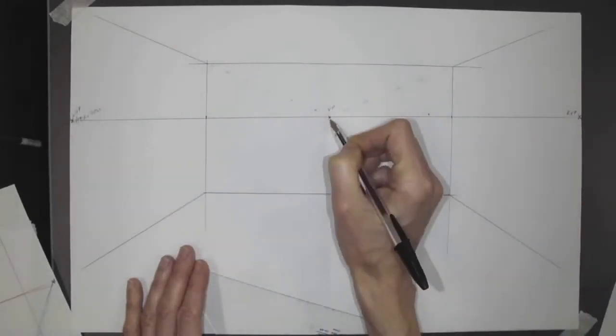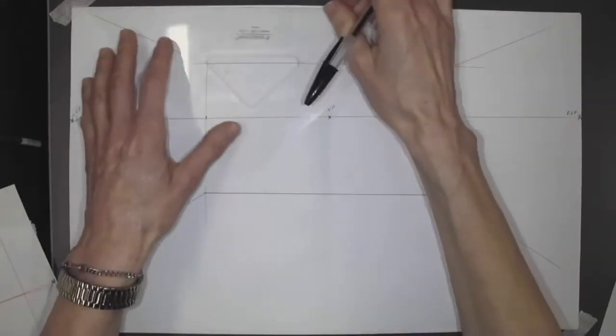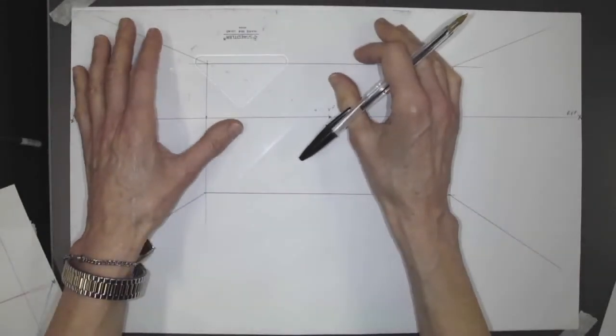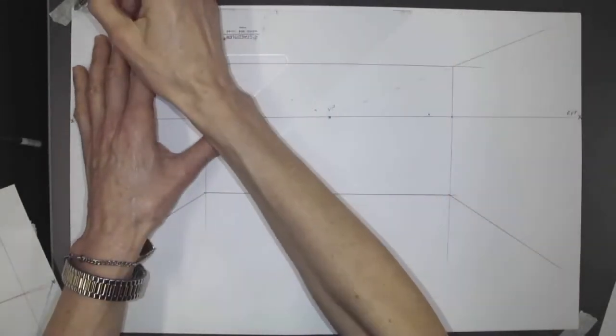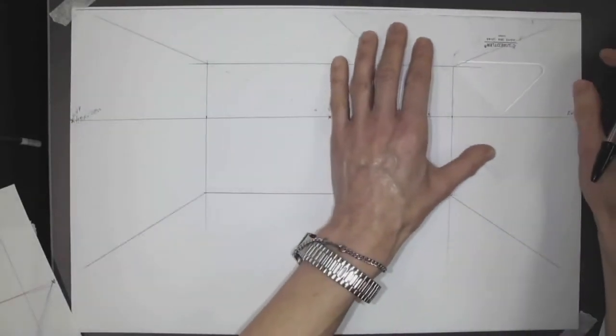So we've got our two vanishing points that go together and our one point vanishing point here. Always when you make these little sketches, you want to make a border all the way around the perimeter of your paper.